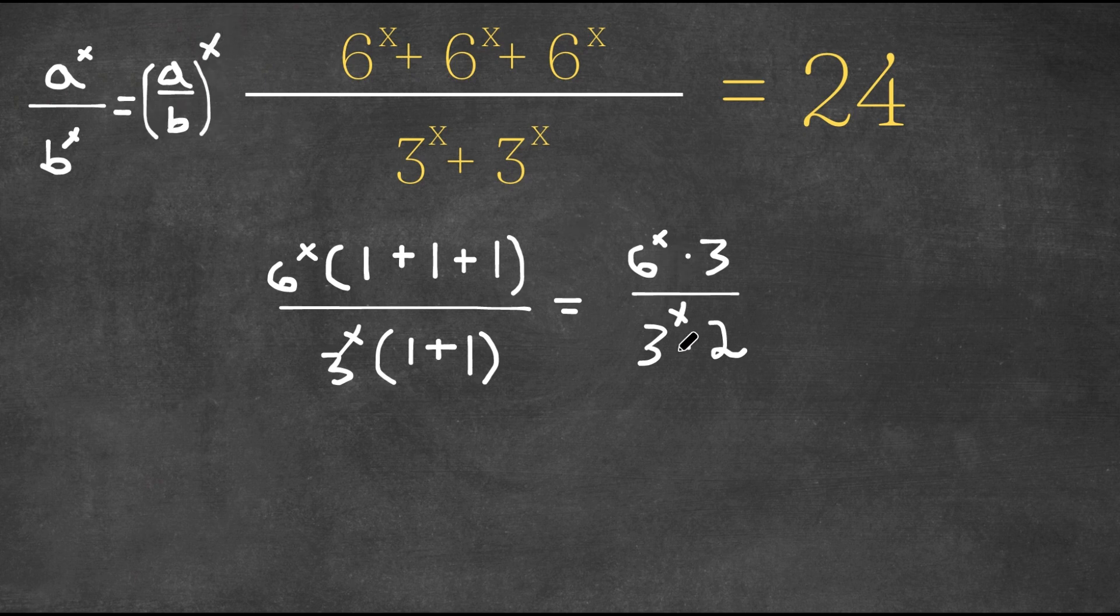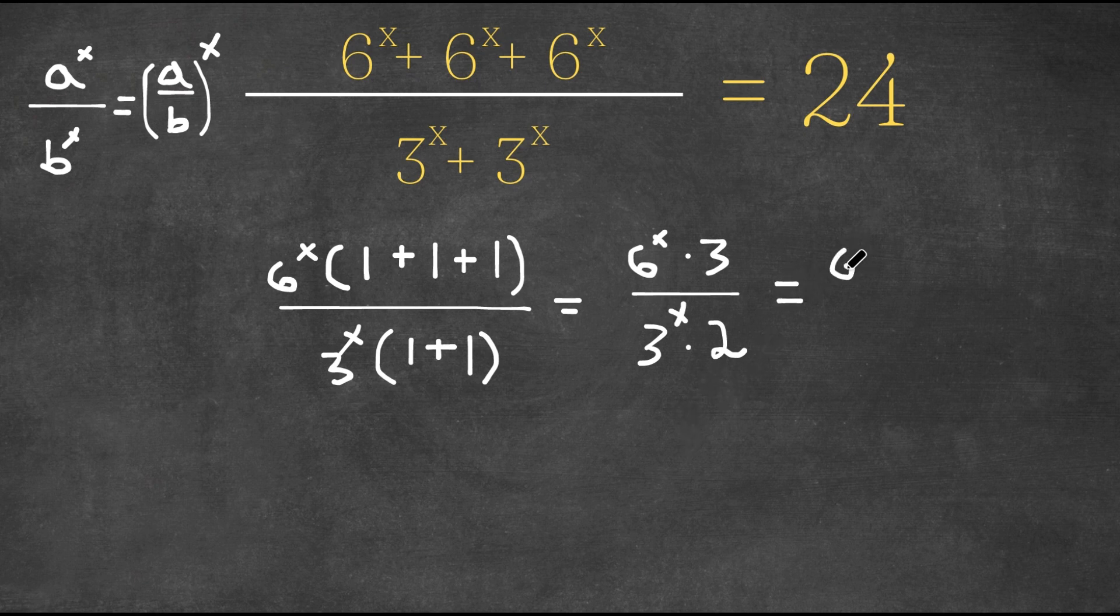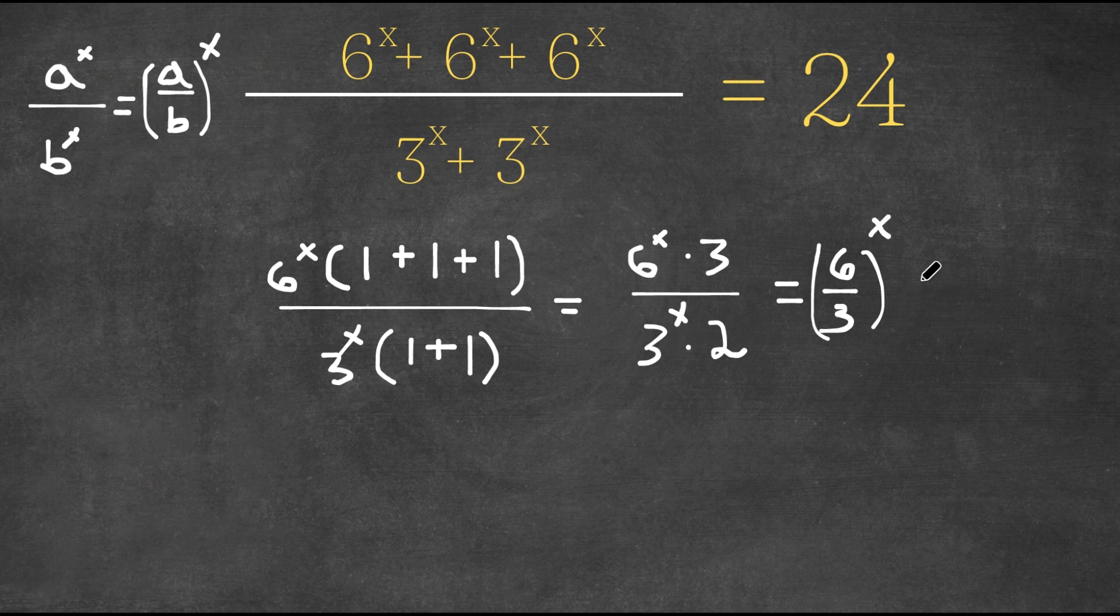So 6 to the power of x over 3 to the power of x, well, this would equal 6 over 3 to the power of x and we are multiplying this with 3 over 2.